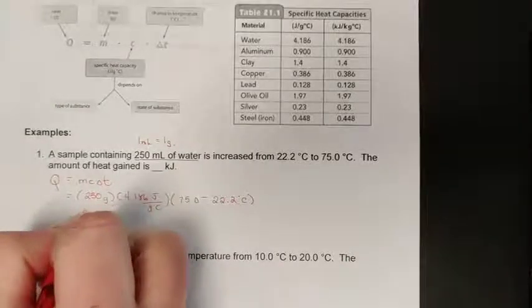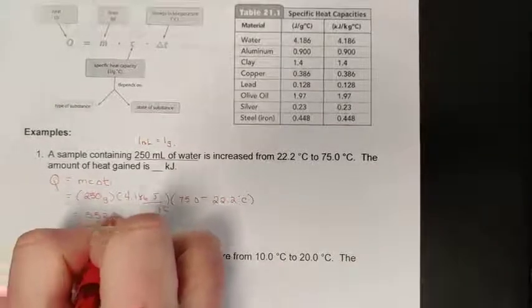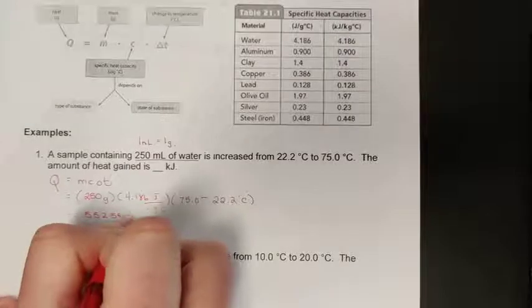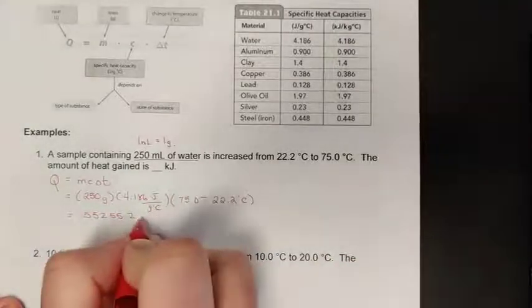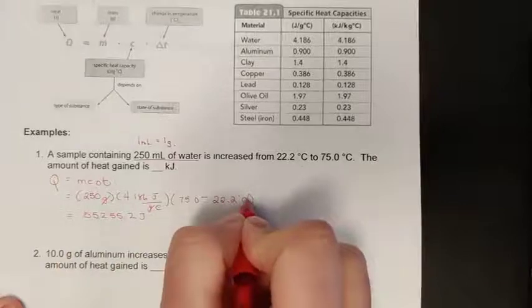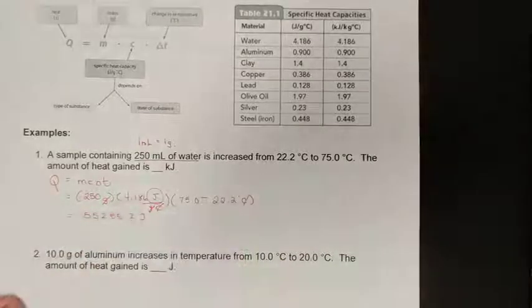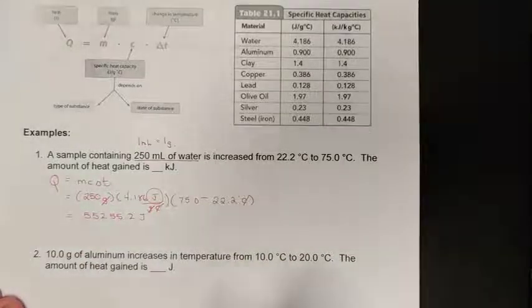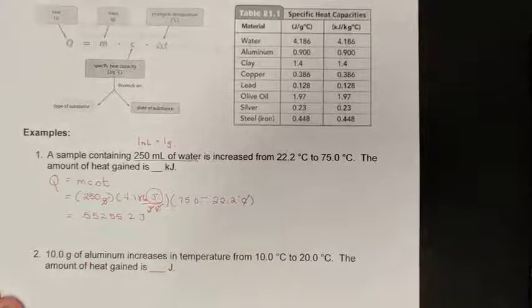It's simply 250 times 4.186 times our difference here of 75 minus 22.2, and we end up with a value of 55,255.2.